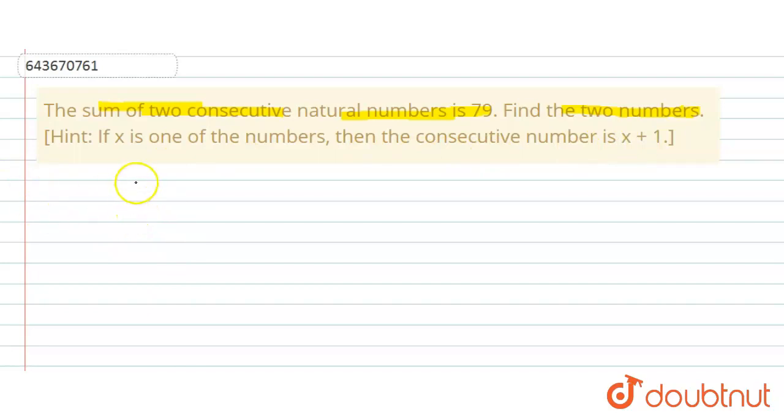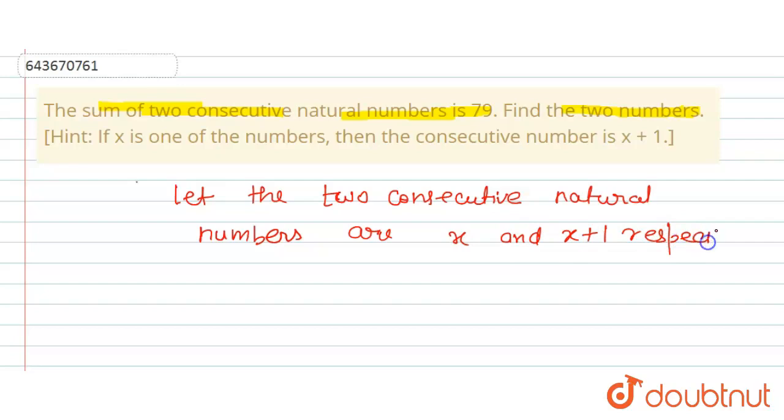So first of all, we will assume. Let us assume let the two consecutive natural numbers are x and x plus one respectively.